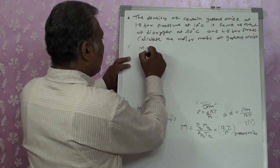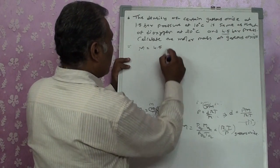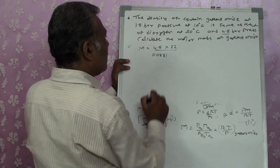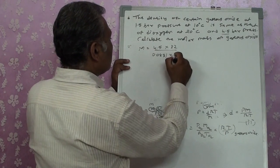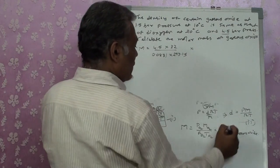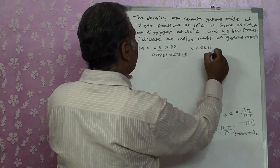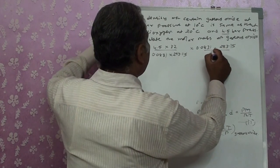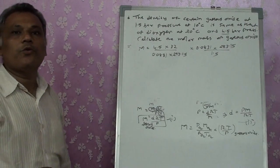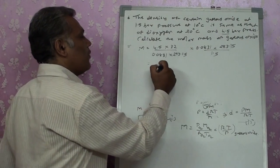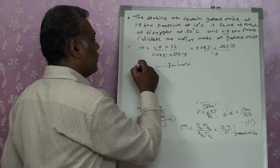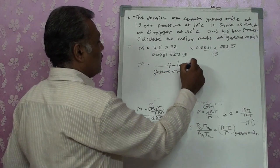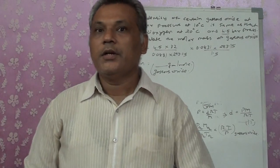Placing values: M_oxide = (P_O₂ × M_O₂ × R × T_O₂ × R × T_oxide) / (P_oxide). Substituting: P_O₂ = 4.5 bar, M_O₂ = 32, R = 0.0831, T_O₂ = 293.15 K, T_oxide = 283.15 K, P_oxide = 1.5 bar. Use your calculator to get M_oxide in g/mol — that is the molar mass of the gaseous oxide.